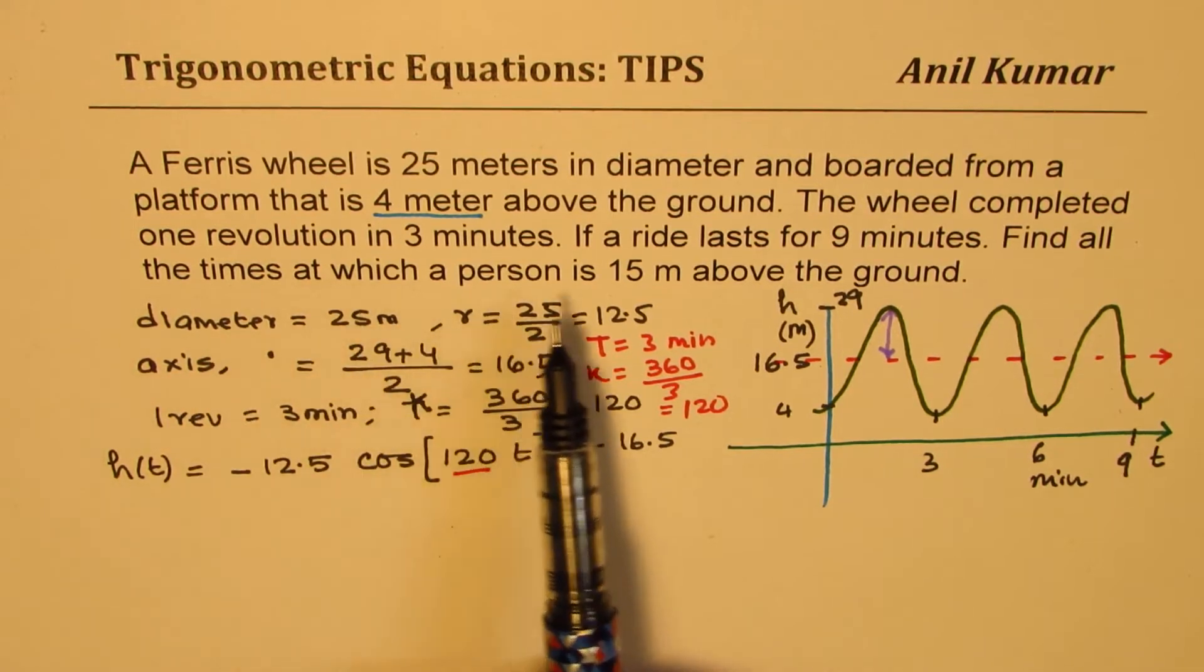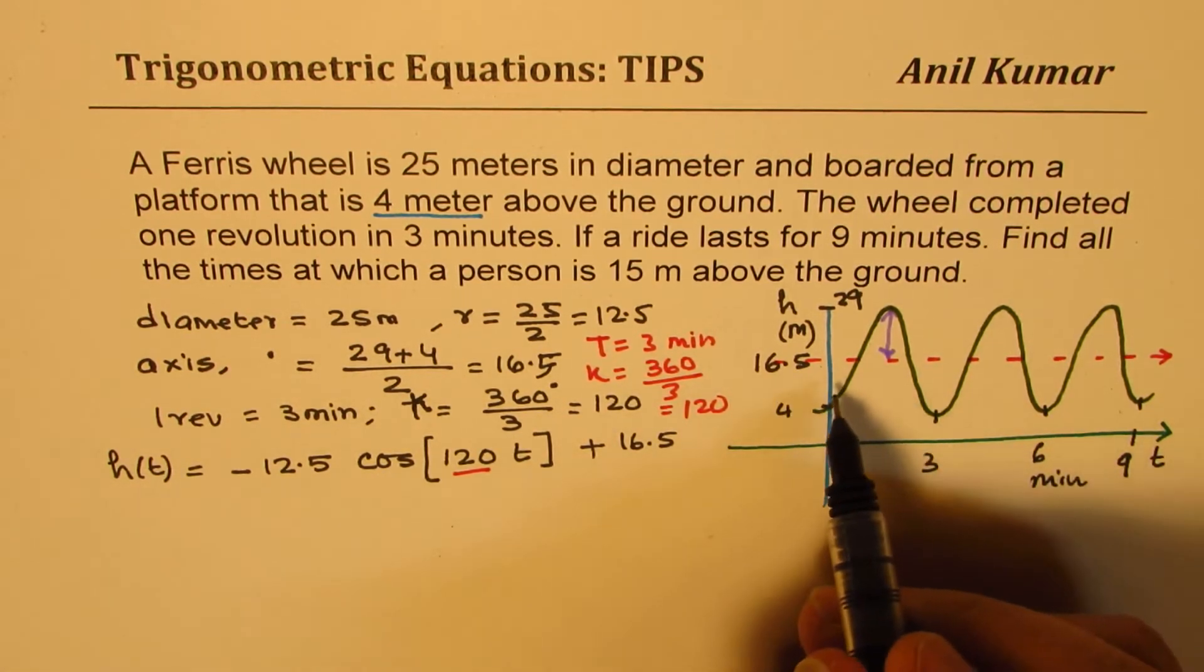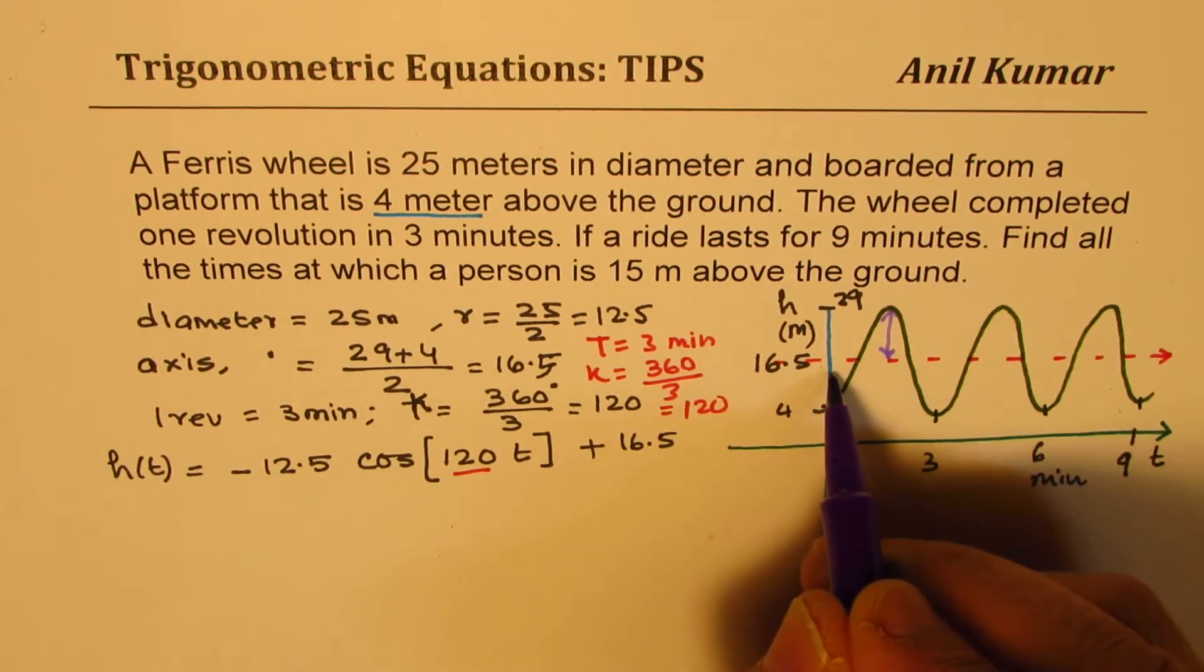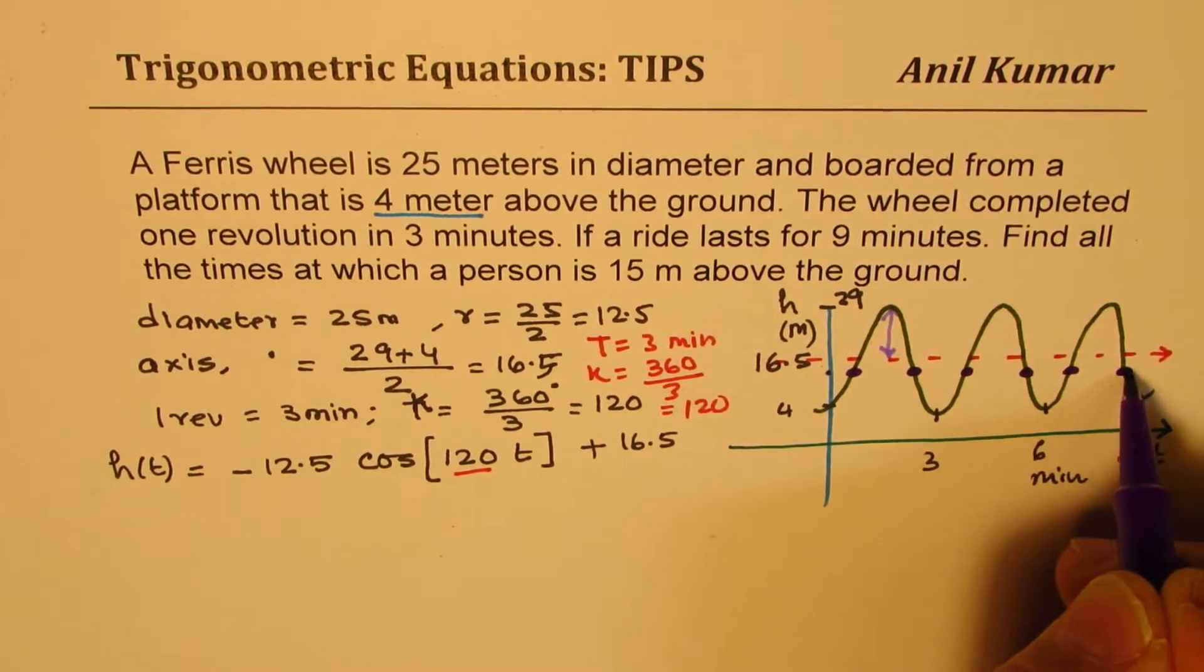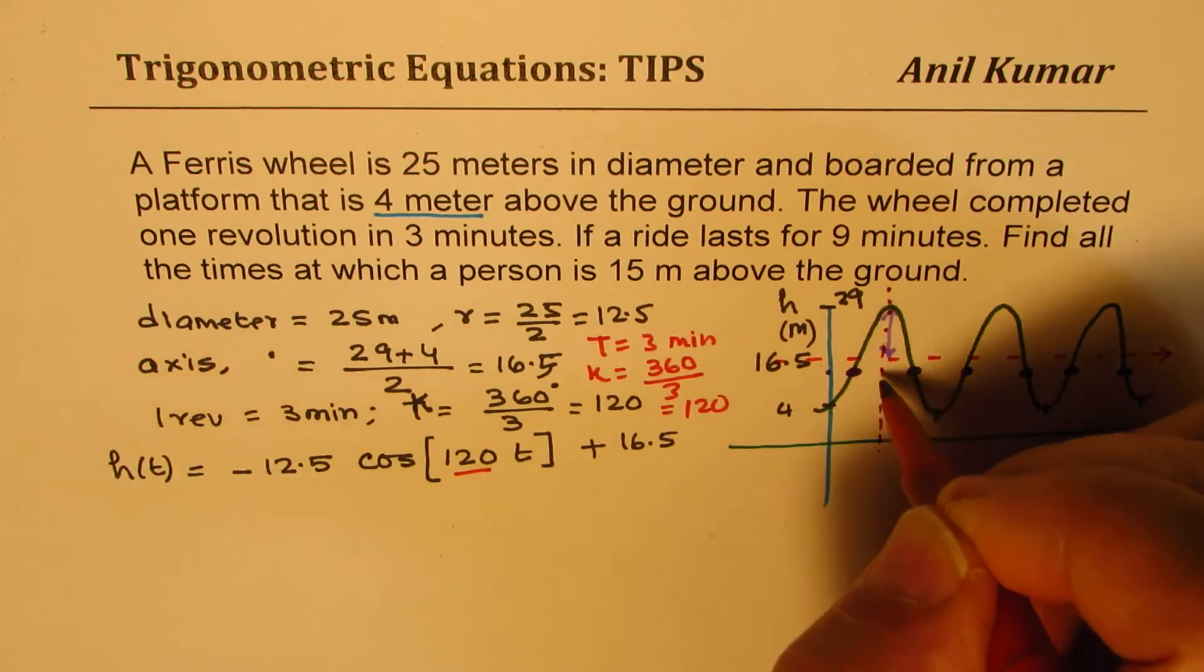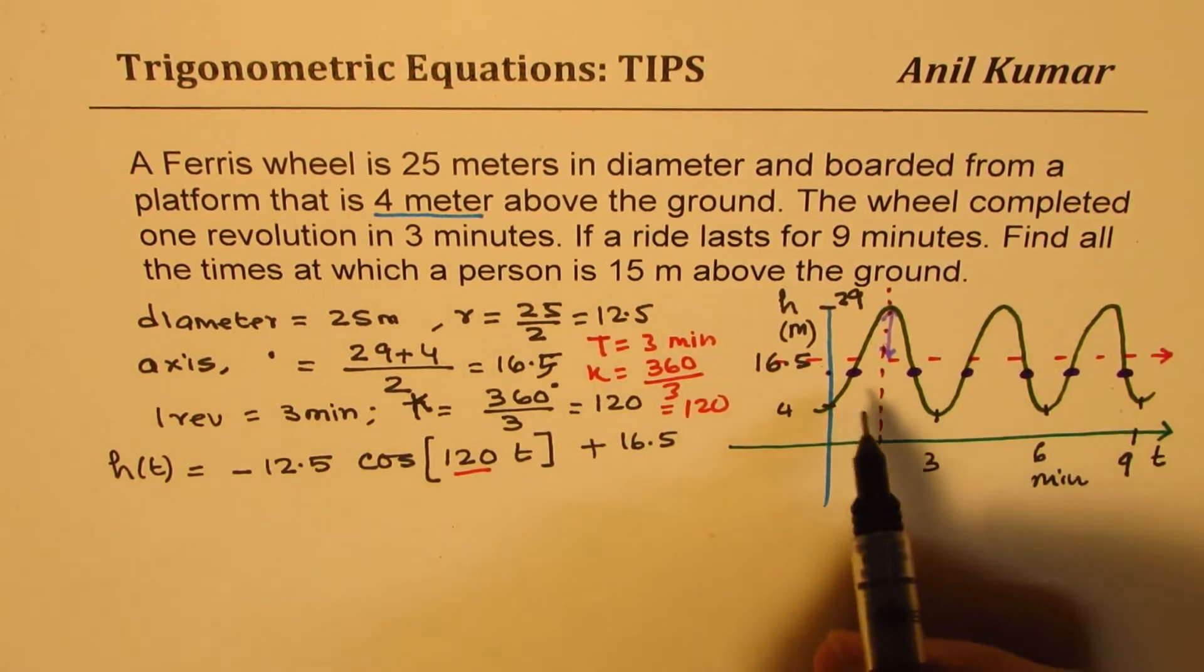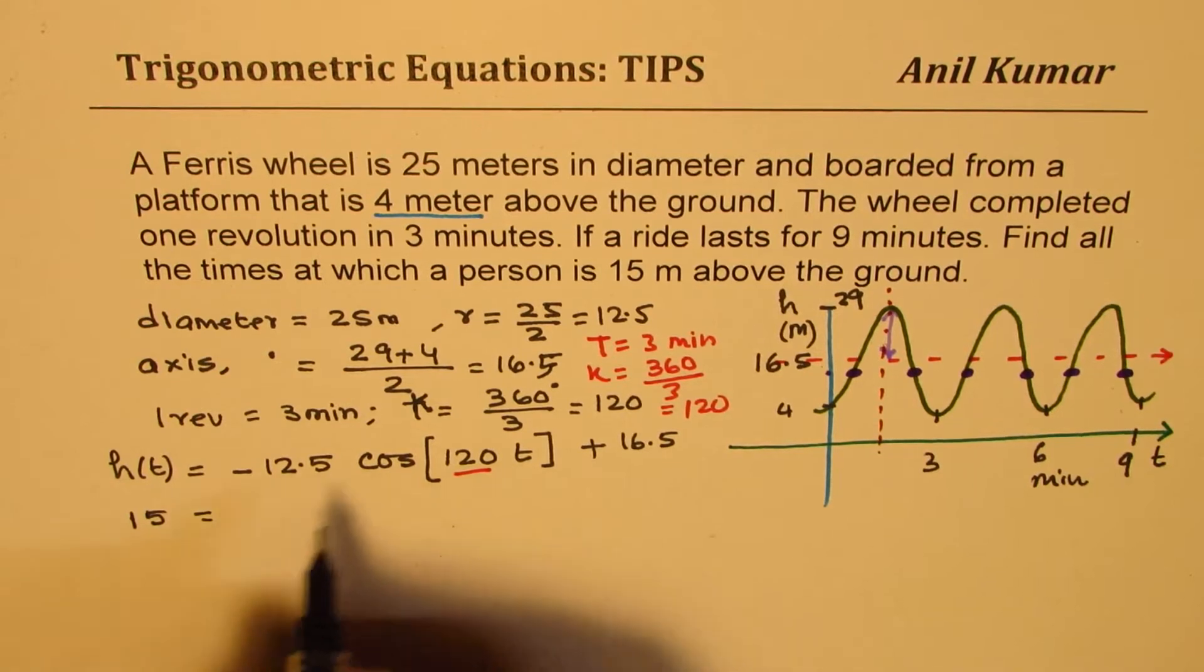Find all the times at which a person is 15 meters above the ground. Let's draw a line there for 15 meters. Slightly less than 16.5, so we want these times. If it is a multiple choice question, you could estimate the time. But let's calculate exactly what the time should be. We want the time at the height of 15 meters, so we'll write height as 15 in our equation and solve for T.